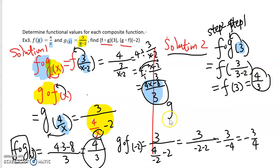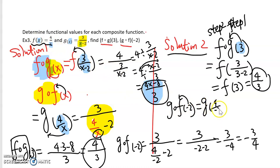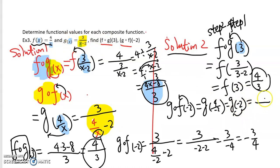Similarly, we find g∘f(−2) using the direct substitution method. We plug negative 2 into f first — so we replace x with negative 2 in f(x) = 4/x, giving 4 divided by negative 2, which simplifies to negative 2. Now we plug negative 2 into the g function, replacing variable x with negative 2, and we end up with the same answer: negative 3/4.